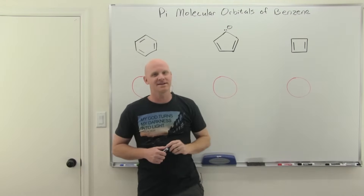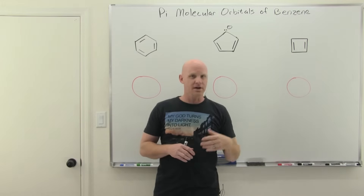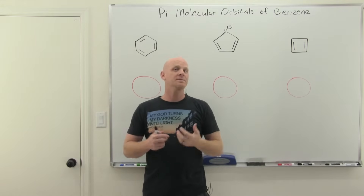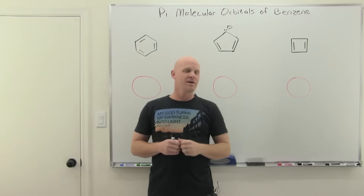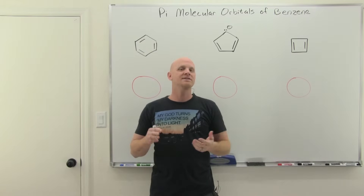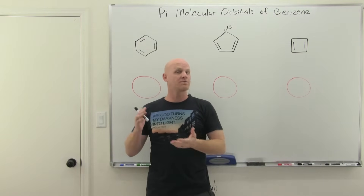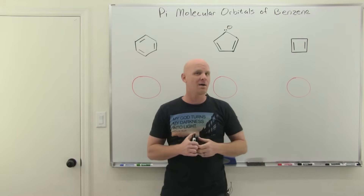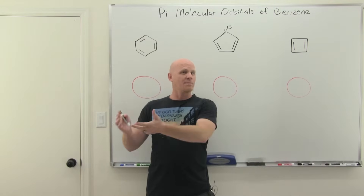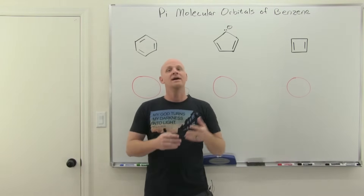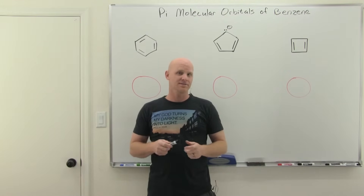The pi molecular orbitals of benzene are going to be the main focus of this lesson. Before we get there, we're actually going to take a look at molecular orbital diagrams, or what are called frost circles, for how you derive the energy levels for the orbitals in those MO diagrams for both aromatic and anti-aromatic compounds. We'll get another reason to see why aromatic compounds are so stable, as well as why anti-aromatic compounds are so unstable.